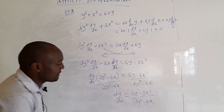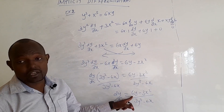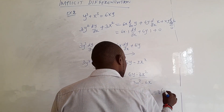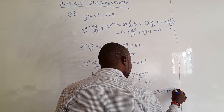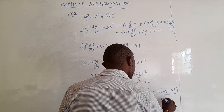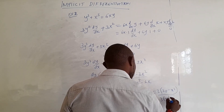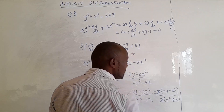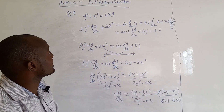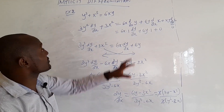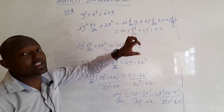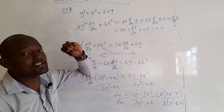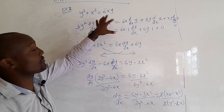We can simplify further by factoring out 3 from numerator and denominator: dy/dx equals (2y minus x squared) over (y squared minus 2x), since the 3s cancel. That completes Example 2. In implicit differentiation you differentiate on both sides, and wherever you differentiate a term containing y you must add dy/dx.